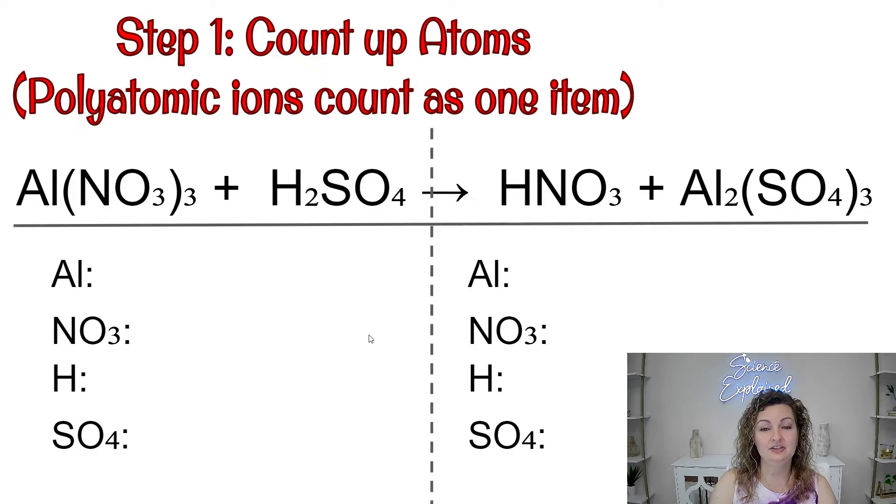Now as we're doing this, I need you to understand that polyatomic ions are going to be counting as one as long as they appear the same on the reactants and the product side. And ours do. Your teacher should give you a list of the common polyatomics that you need to start memorizing. But for the meantime, I'm going to tell you that NO3 and SO4 are polyatomics and we're going to count those as one all together.